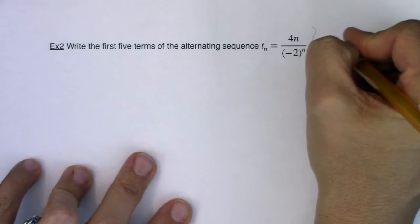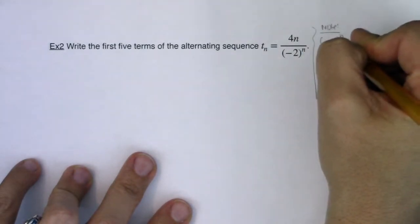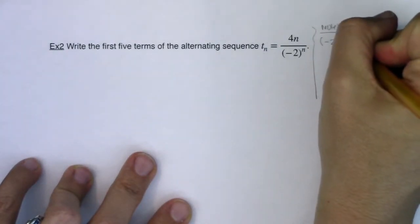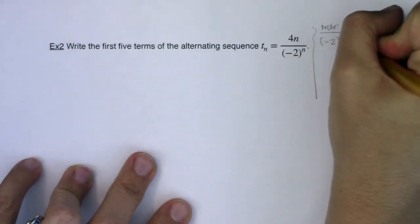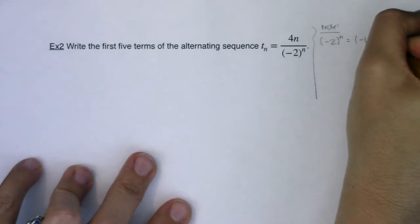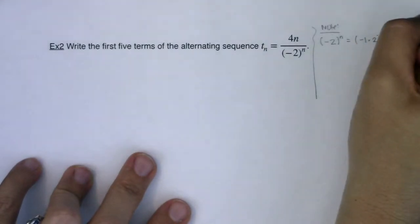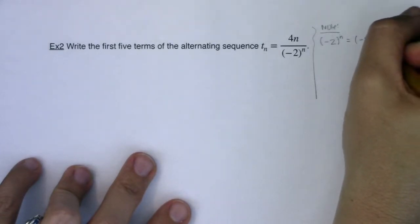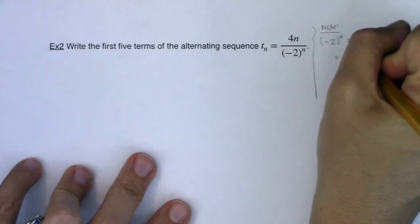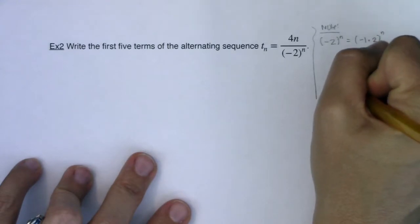Let's think about negative 2 to the n. I'll just make a little note on the side here. I think you'll give me that negative 2 can be written as negative 1 times 2, and I can raise that to the n power. Because I have multiplication inside this parentheses, I can distribute the exponent. So this becomes negative 1 to the n times 2 to the n. And there is our hidden alternator.